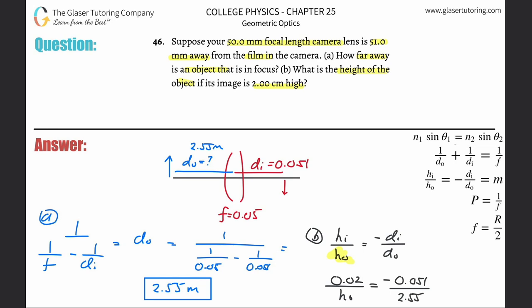To solve this for ho, we simply bring this over, do a whole bunch of crossing - look at how easy this is - and that's then multiplied. Very simple. This is now 2.55 multiplied by 0.02 divided by negative 0.051, and it comes out to be negative one meter.